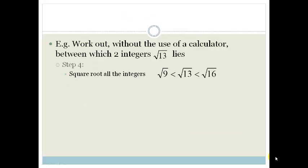What we're going to do then is we square root all the integers. We square root 9 and we square root 13 and square root 16, and we end up with root 13 lying somewhere between 3 and 4. That is what we're really talking about. That's how easy this is. Now let's do some examples just to make sure you know how to do it.